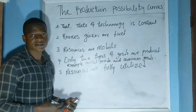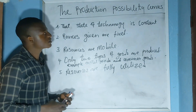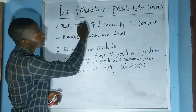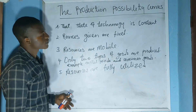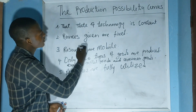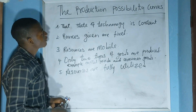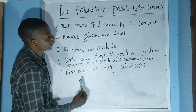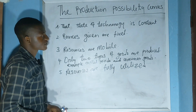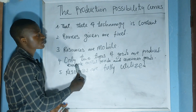Welcome to Sam's Economics Tutorials. In today's video, I will be presenting the production possibility curve. By definition, the production possibility curve is a curve that shows the possible combination of two goods that a country or firm can produce using all its resources over a given period of time.